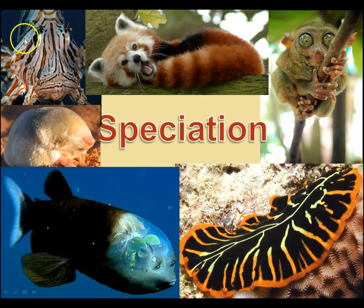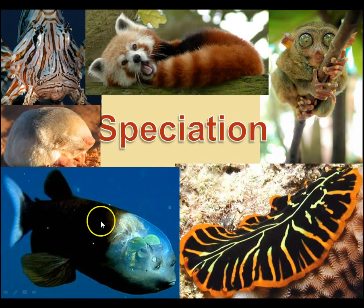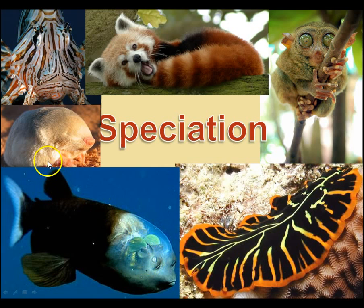Here are just some pretty crazy species out there. We have the lionfish, red panda, tarsier, a platyhelminthes — a type of sea slug — the barrelfish, a really cool fish whose eyes are actually looking straight up and it's got a clear head, and the golden mole.